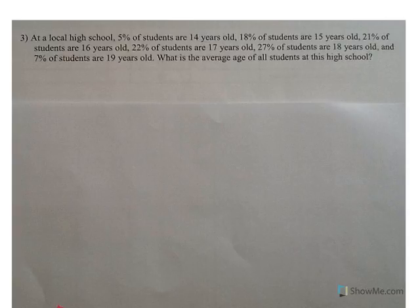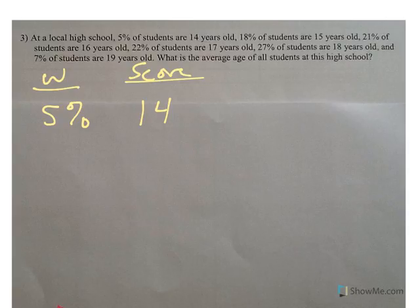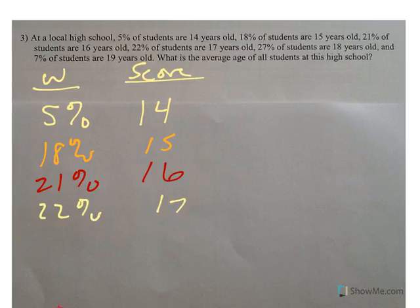Number three. At a local high school, 5% of students, well, that's a weight. So 5% of the students are 14 years old. We'll call this a score or whatever. So 5% are 14. 18% are 15. 21% are 16. 22% are 17. 27% are 18. And 7% are 19.